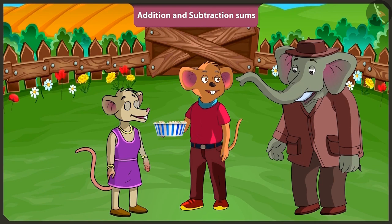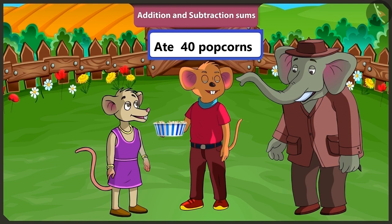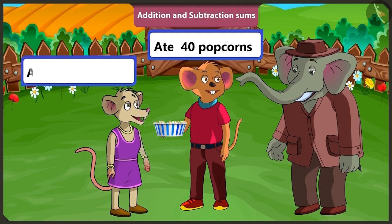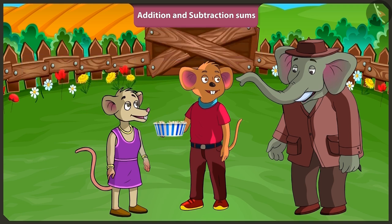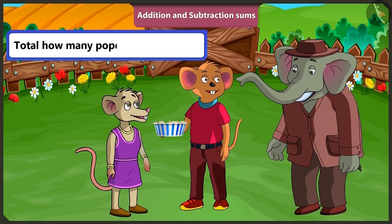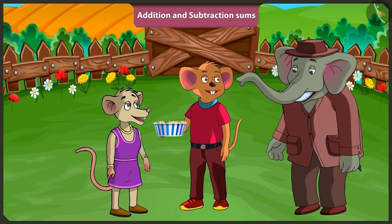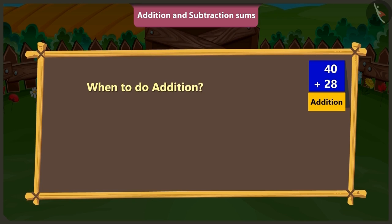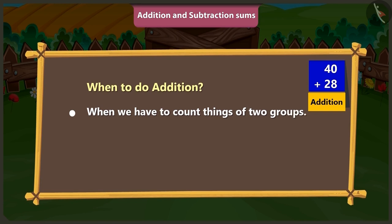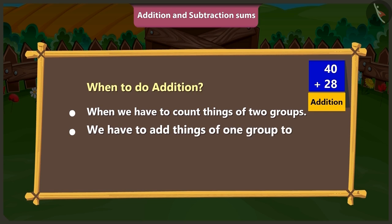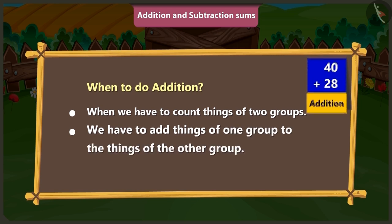Choo Choo, how many popcorns did you eat in one minute? I ate 40 popcorns in one minute. And Chichi, you? I ate 28 popcorns. If I ask: total how many popcorns did Choo Choo and Chichi eat, then to know that, we will have to do the addition of 40 and 28. But how would we know that we have to do addition?